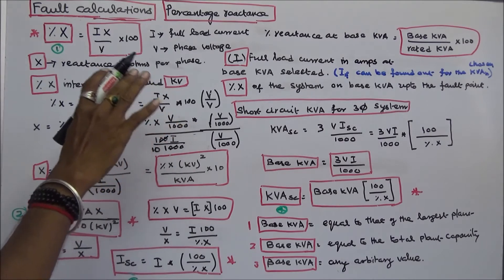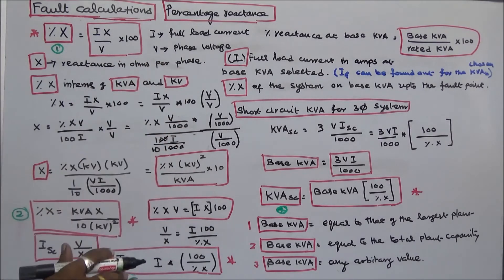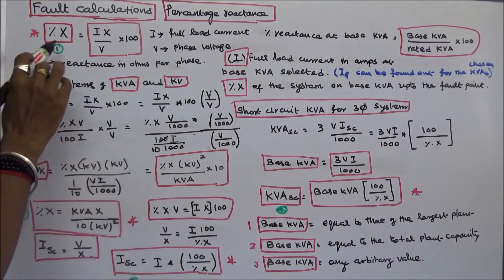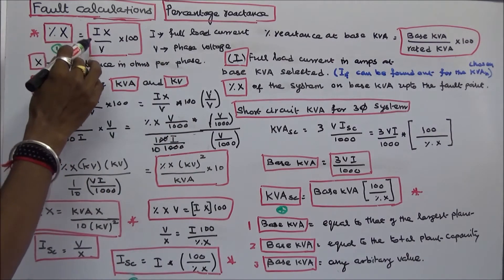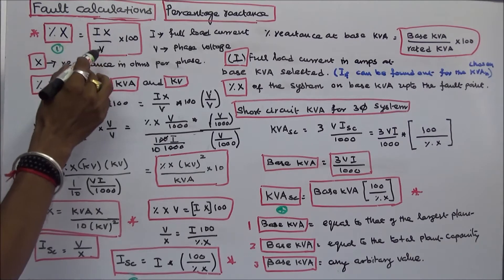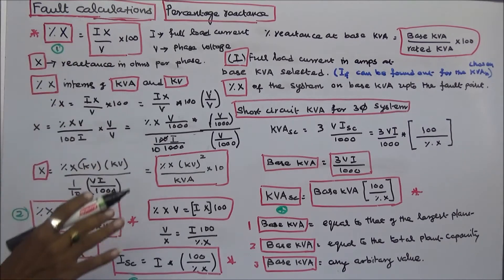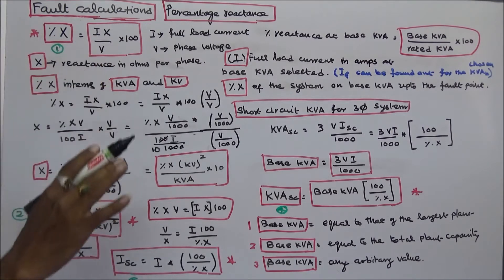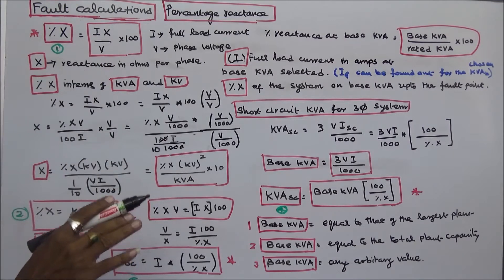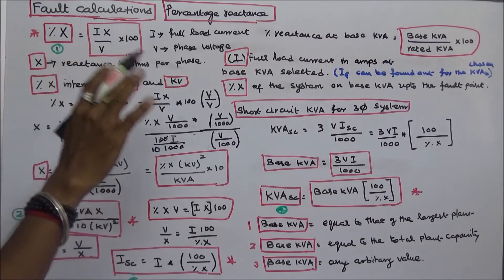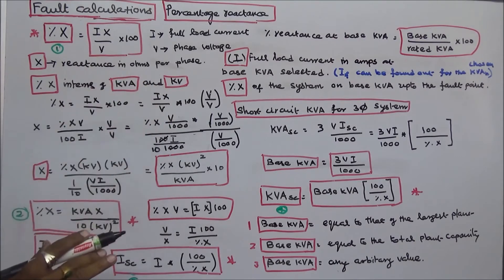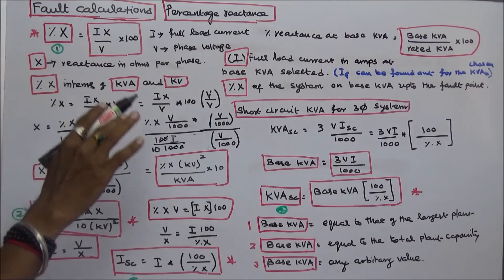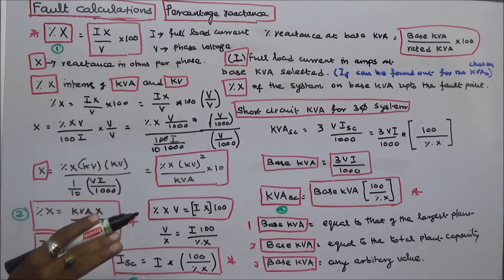In this class we discuss percentage reactance. Percentage reactance is equal to I times X divided by V, multiplied by 100. Where I is the full load current, V is the phase voltage, and X is the reactance in ohms per phase.